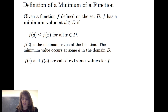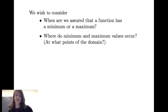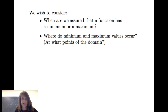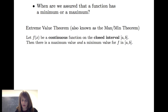f of C and f of D are called the extreme values for f. Let's consider two questions: When are we assured that a function has a minimum or a maximum? And where do the minimum and maximum values occur — at what points of the domain? Let's consider the first question: When are we assured that a function has a minimum or a maximum? Well, we have a theorem for that.